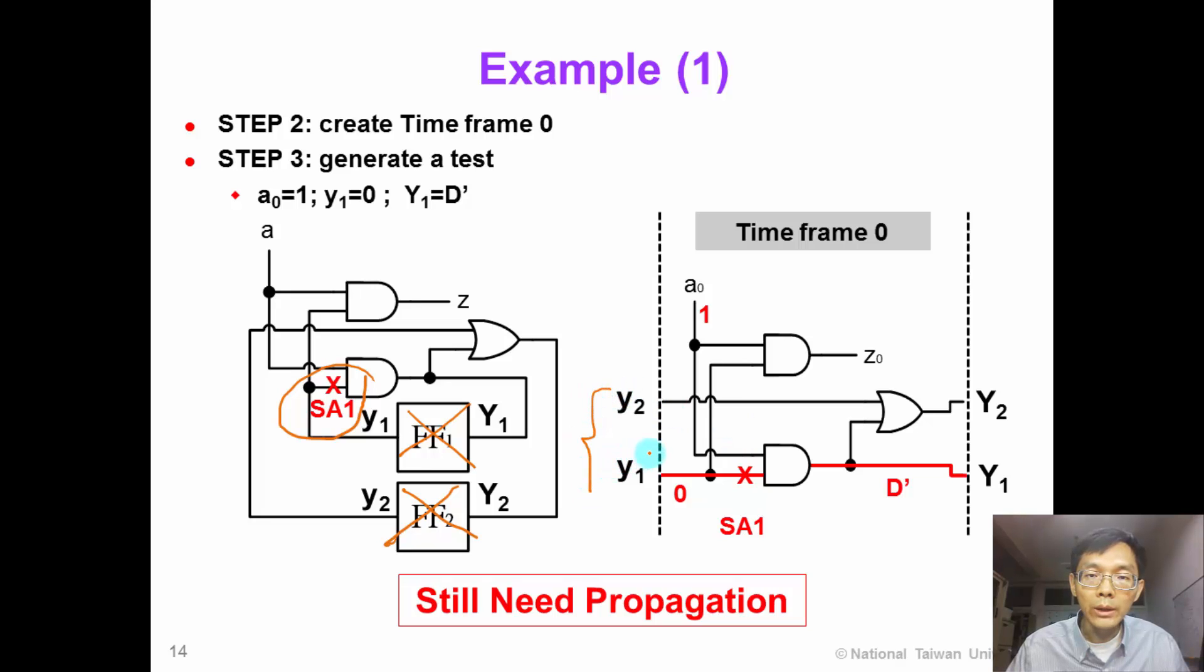Small y1 and y2 are now inputs. And big y1 and y2 are now outputs. If we want to propagate this fault to the right, then we will need a equal to 1. If we want to activate this fault, small y1 needs to be 0. Now, this test is not done yet because y1 is not primary output. So we still need to propagate to the right.